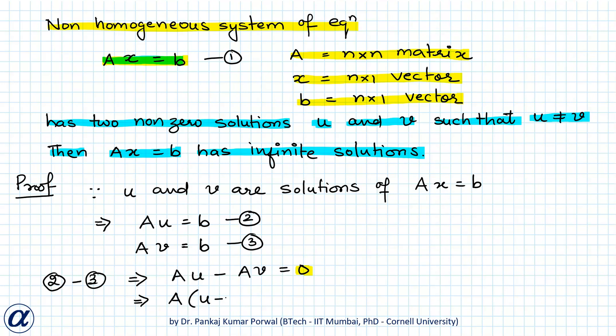And because U is not equal to V, U minus V will not be 0. So here I can say that U minus V is a non-trivial solution of the homogeneous system AX equals 0.